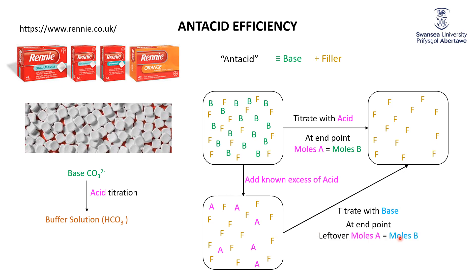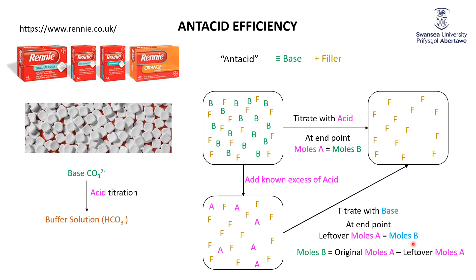At the endpoint of this second titration, the moles of sodium hydroxide we had to add equal the leftover moles of acid. Since we know how much acid we started with — just as we knew we started with 20 students — and we can determine by this titration the moles of acid left, we can say that the moles of base in the original antacid equals the original moles of acid we started with, minus the moles of acid left over determined by the titration. Hopefully that makes the experiment a little bit clearer.